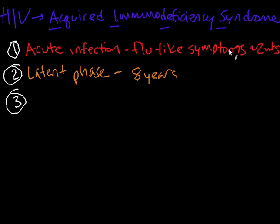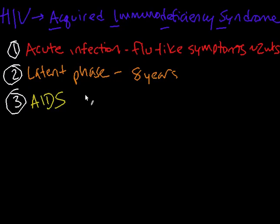As the virus starts to win the race against those helper T cells, you start to reach a threshold where your body just can't compensate anymore. This is what we call AIDS — the final phase of an HIV infection. Clinically, it's defined as having less than 200 helper T cells per microliter of blood. It's really important to know that this is very, very low — far fewer than normal — and your body's immune system isn't able to ramp up the way that it normally does.